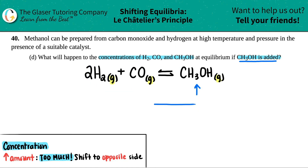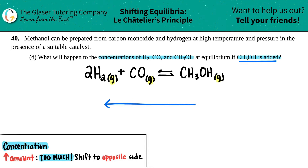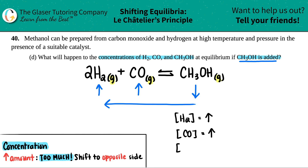Once you make that arrow and determine where you're shifting, you get rid of that arrow and write your new arrows. Because I'm going to the reactant side, the reactants would increase — H2 is going to go up, CO is going to go up. And since I'm coming from the product side, CH3OH will go down. So the concentration of H2 will increase, the concentration of CO will also increase, and the concentration of CH3OH needs to decrease because you added way too much. And that's the answer.